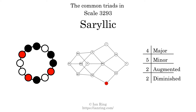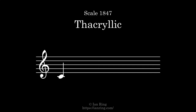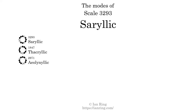Here is a Hamiltonian path of parsimonious voice leading that uses all the triads. This scale has 8 modes. The first mode is itself. The second mode is scale 1847, also known as the acrylic. It sounds like this. The third mode is scale 3533, also known as the acrylic. It sounds like this.